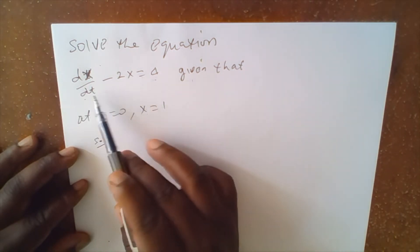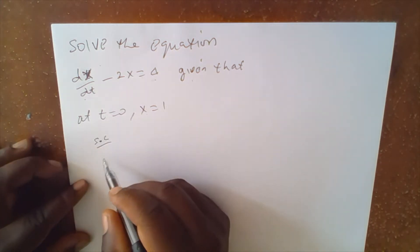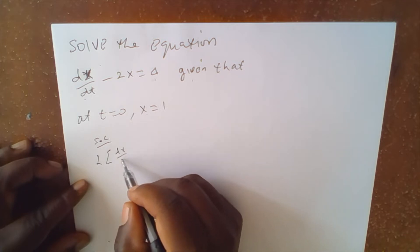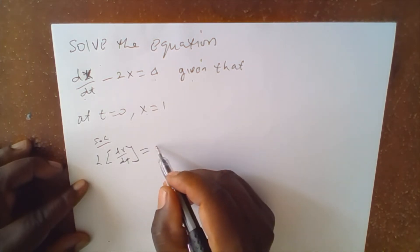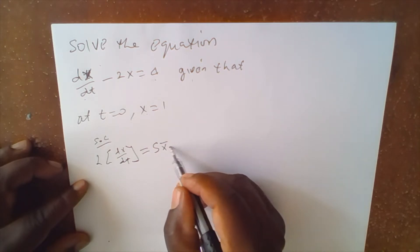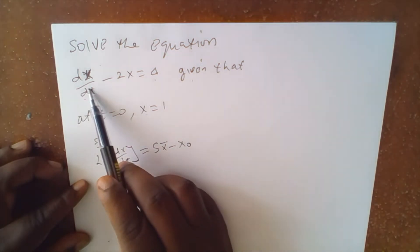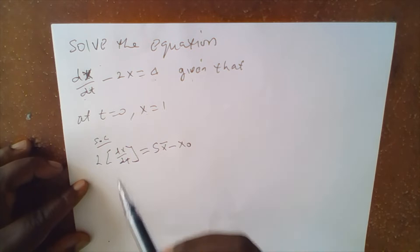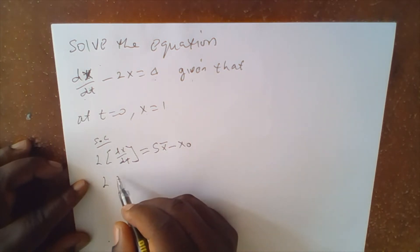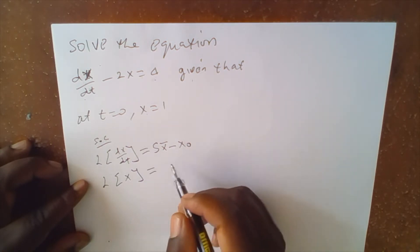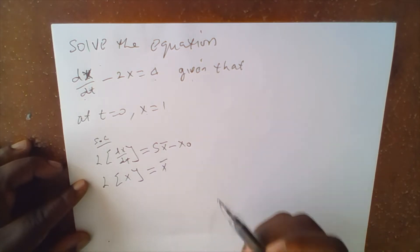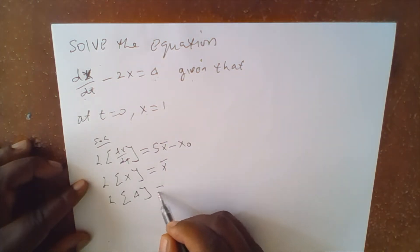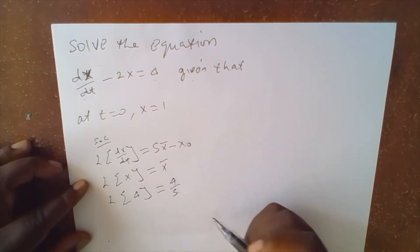To get the Laplace transform of this equation: the Laplace transform of dx/dt is s·x̄ minus x₀. The Laplace transform of 2x is 2x̄. And the Laplace transform of 4 is 4 over s.